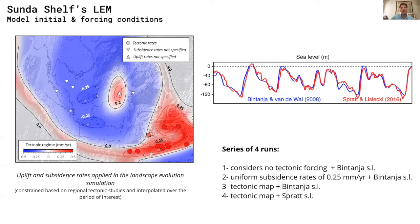We performed a series of simulations with four main scenarios where we varied the forcing conditions: one with no tectonic forcing, one with a uniform subsidence rate of 0.25 mm per year as suggested by Monta, Clarisse, and Laurent, and then using our tectonic map with the two different sea level curves.